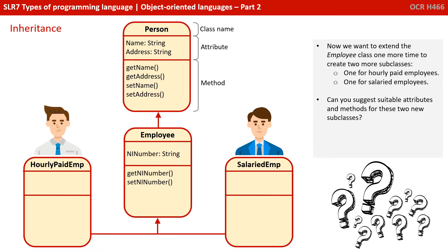Now let's say we want to extend the employee class one more time to create two further subclasses — one for an hourly paid employee and one for a yearly salary paid employee. Can you suggest suitable attributes and methods for these two new subclasses? Pause the video and see if you can work it out now.